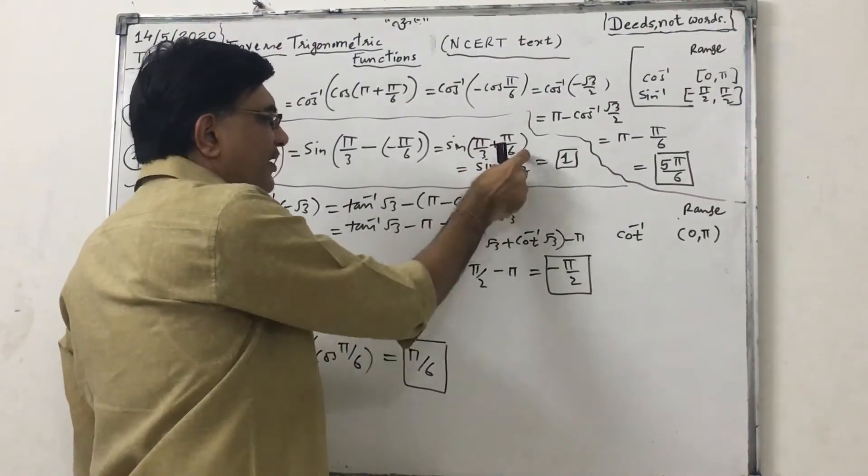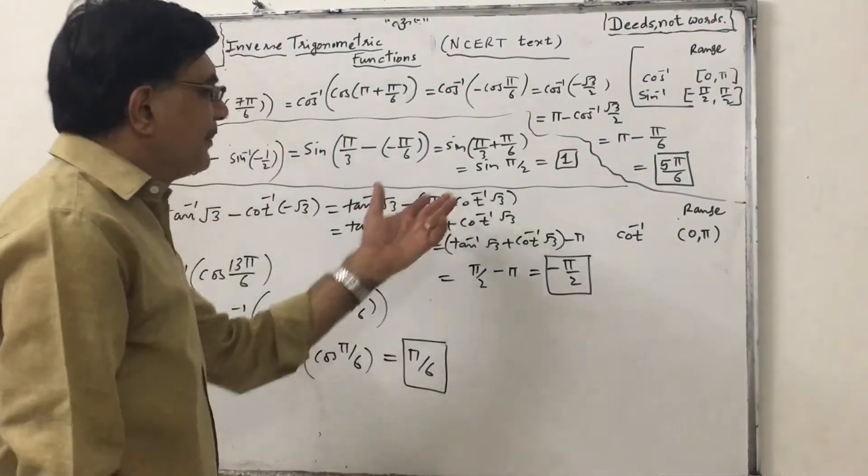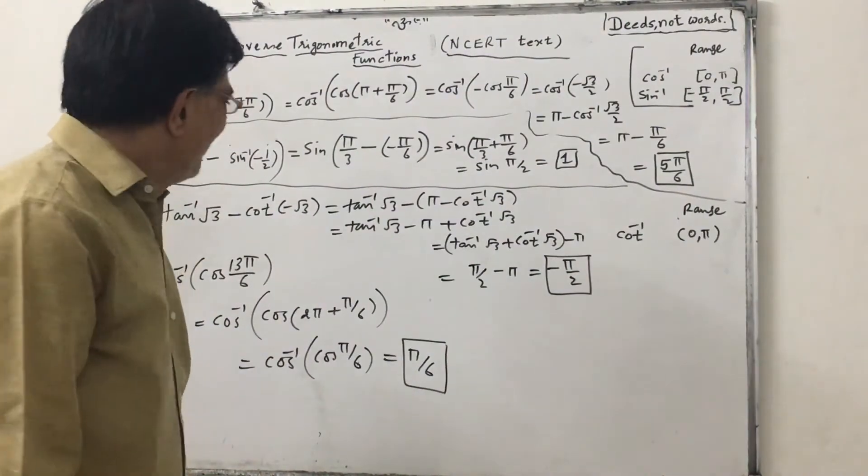So total 90 degrees, in short it is π by 2, and sin π by 2 is 1.